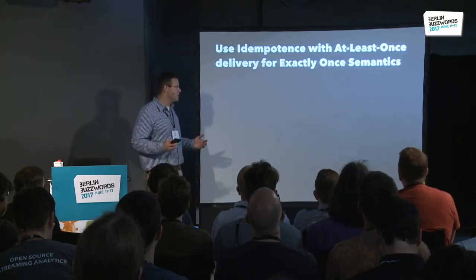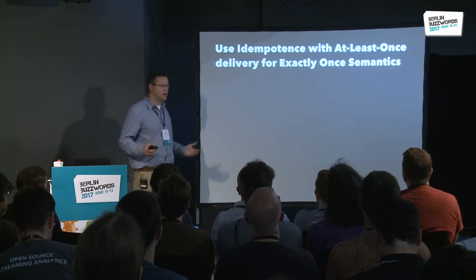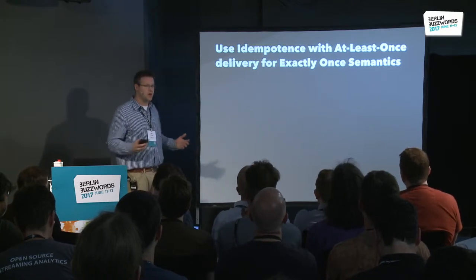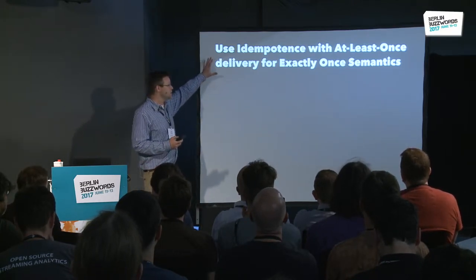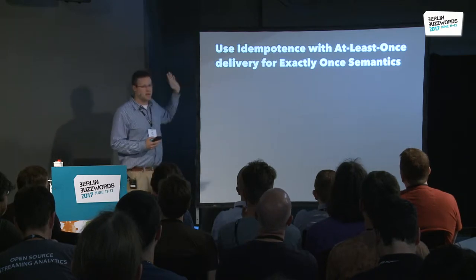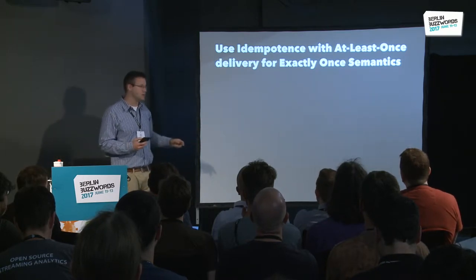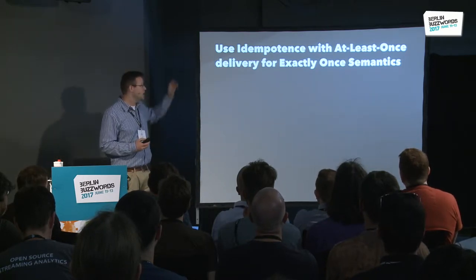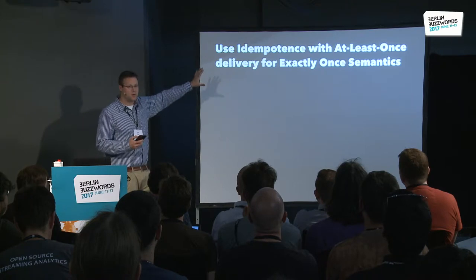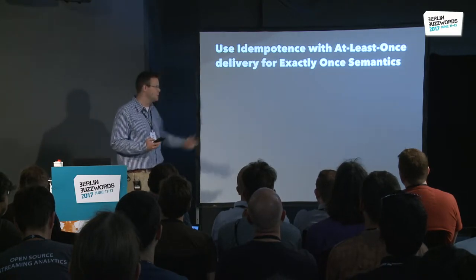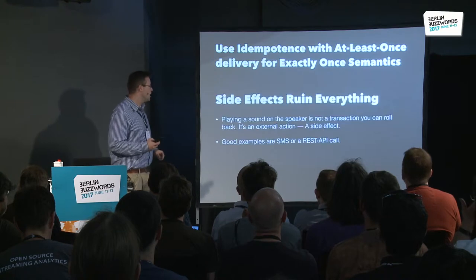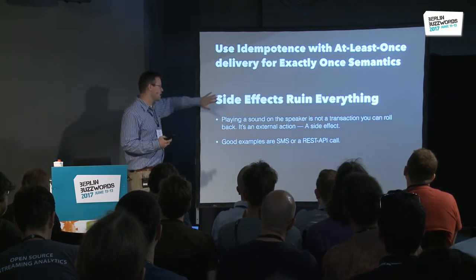Some other things that are important to think about: I can use idempotence with at-least-once delivery — that is, I can have my client send the thing over and over until it's confirmed — to get exactly-once processing. That helps me ensure I count Beetlejuice exactly three times.